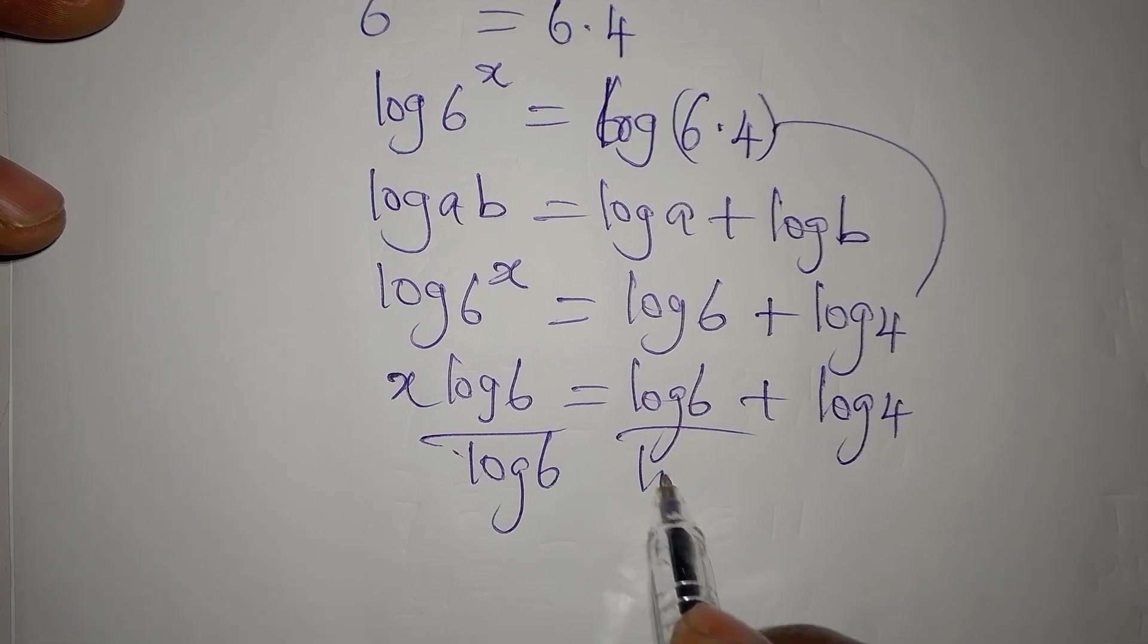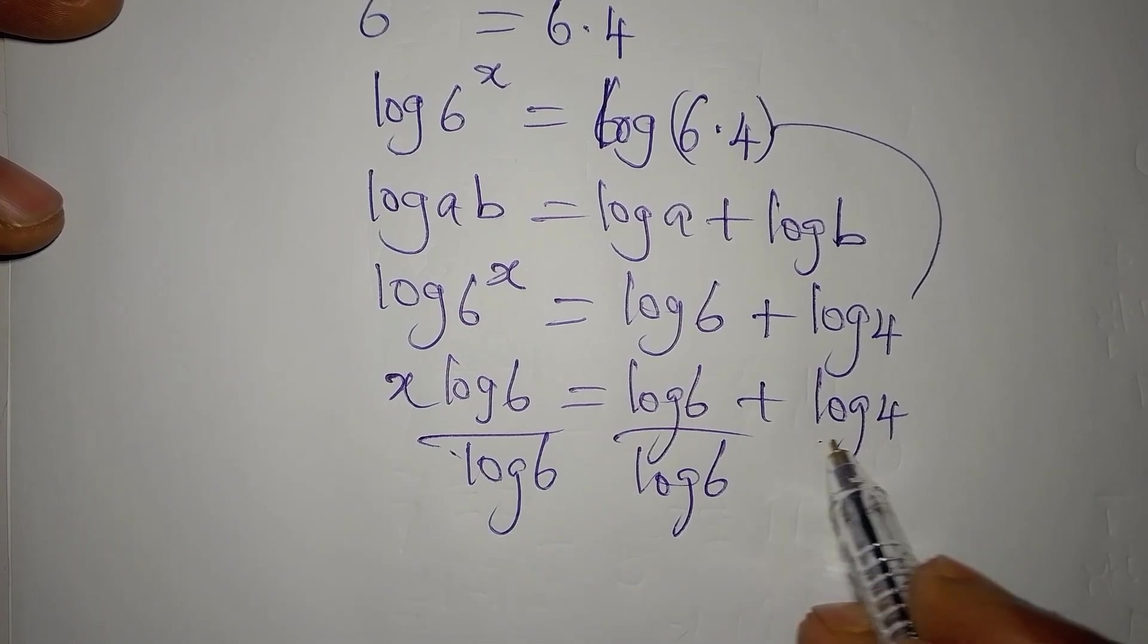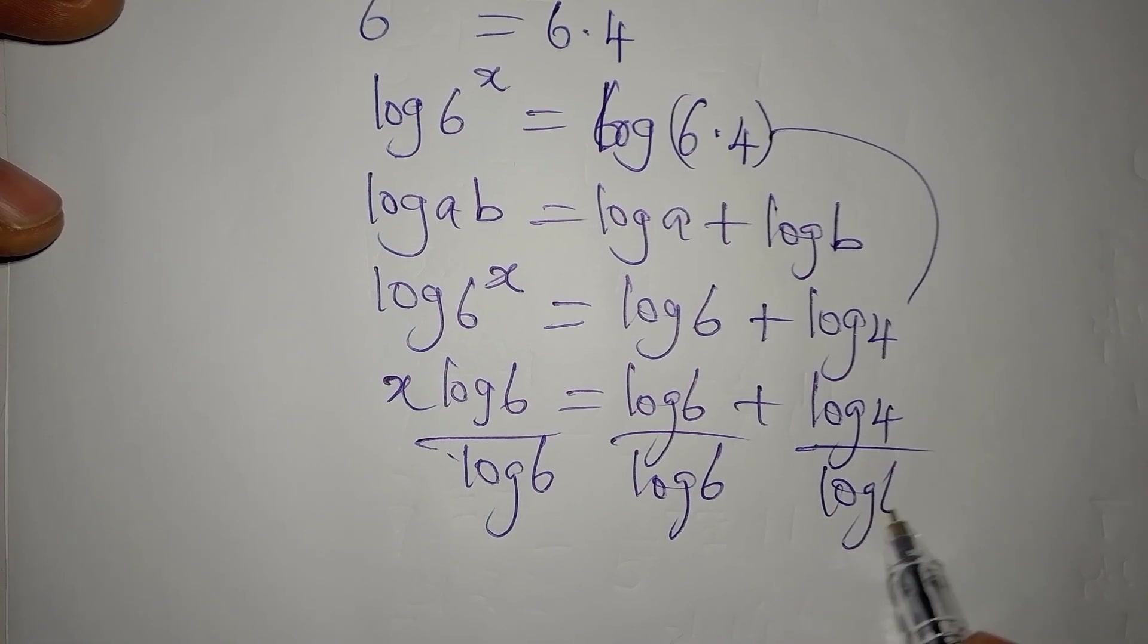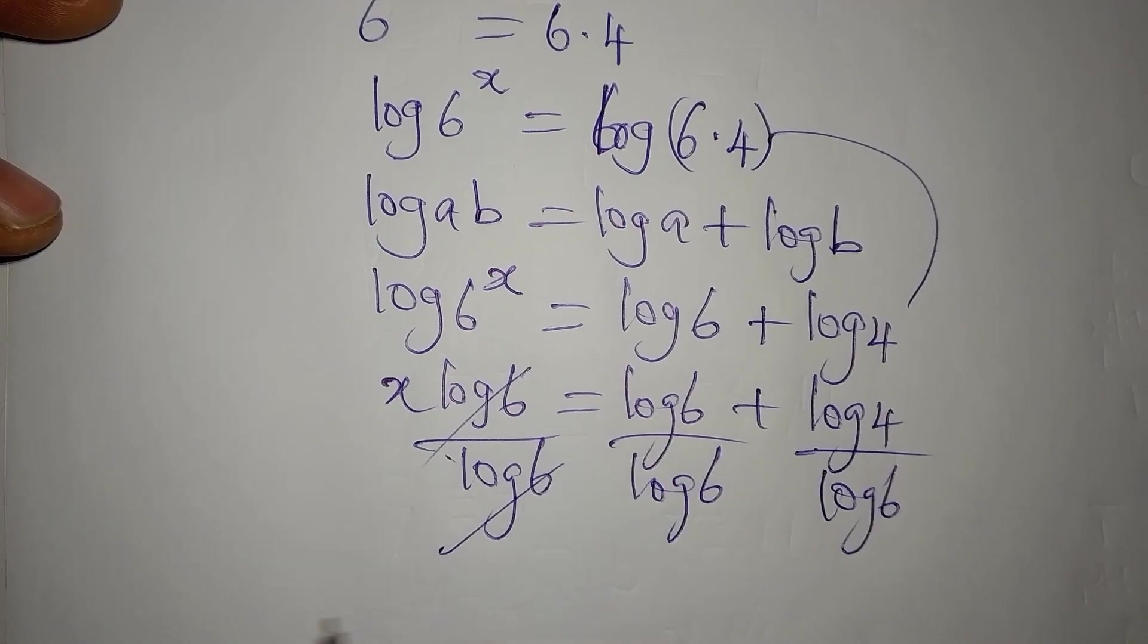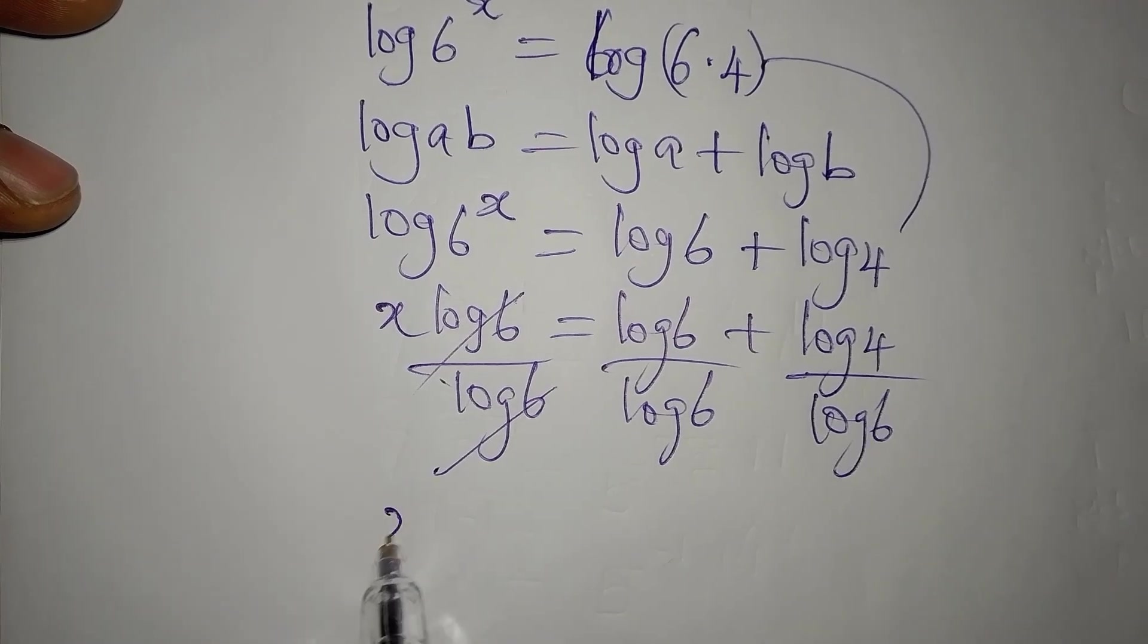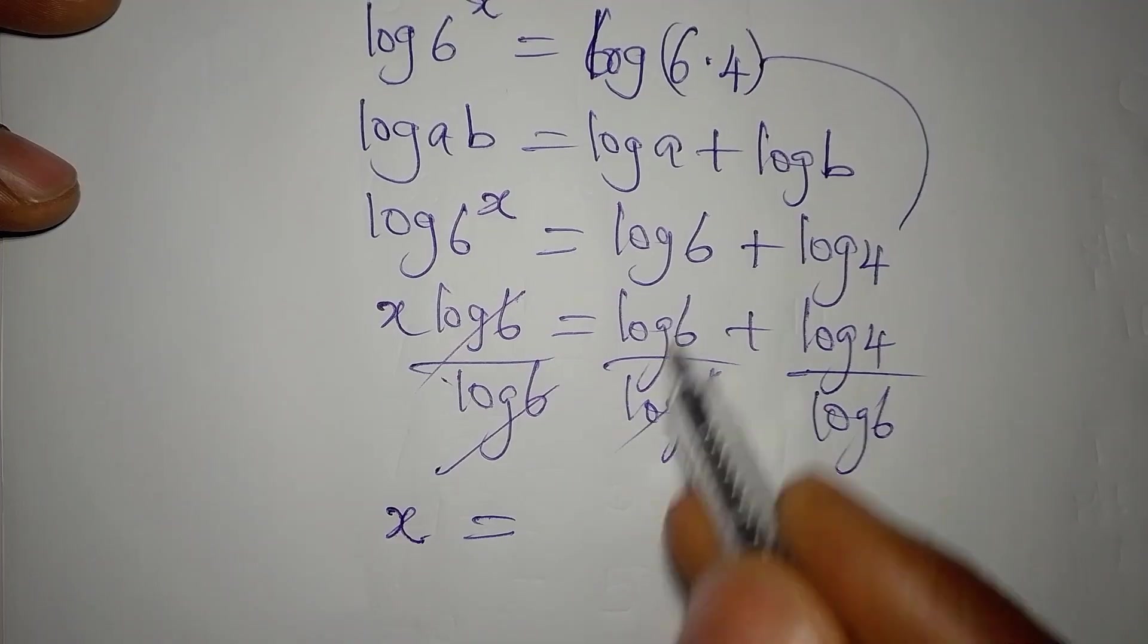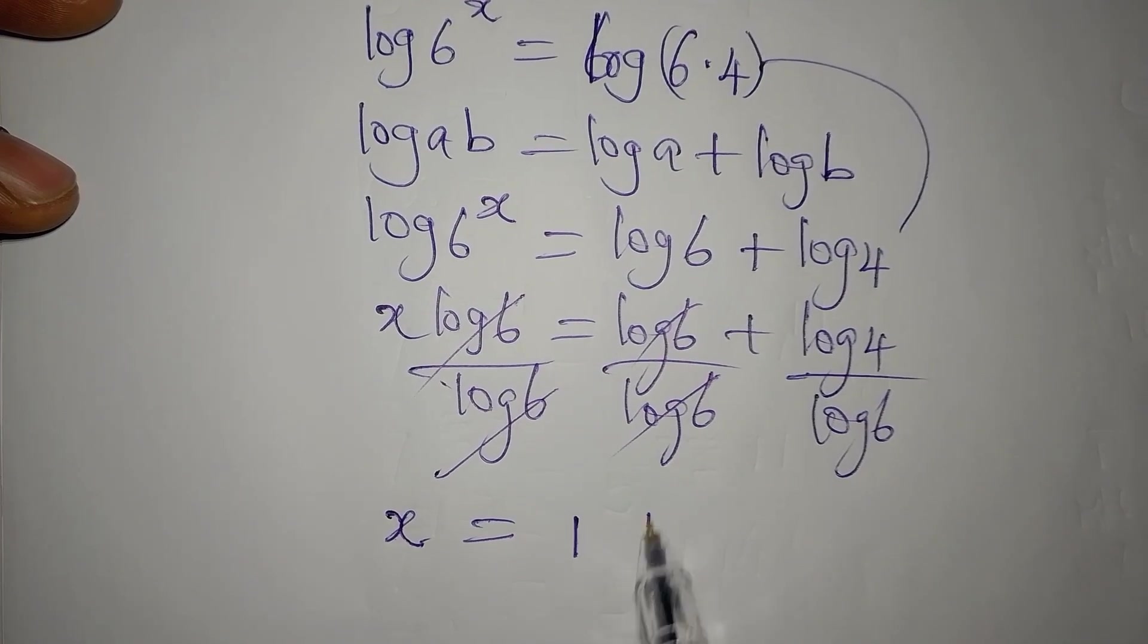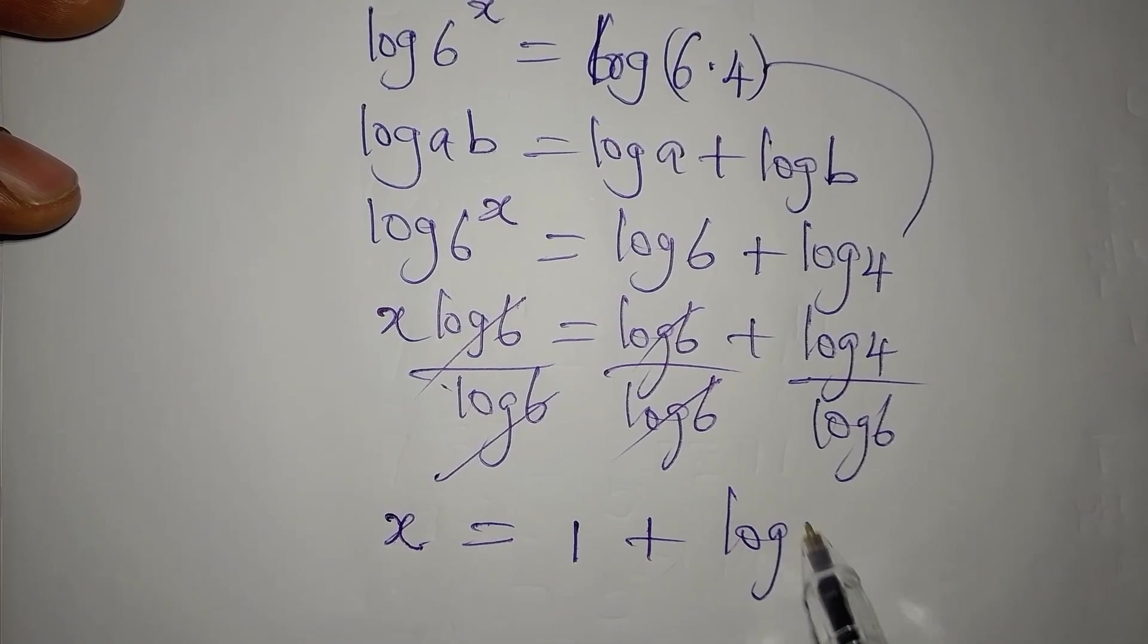Divide this by log 6, equally divide that by log of 6, so that this will cancel out and x will be equal to 1 plus log 4 divided by log of 6.